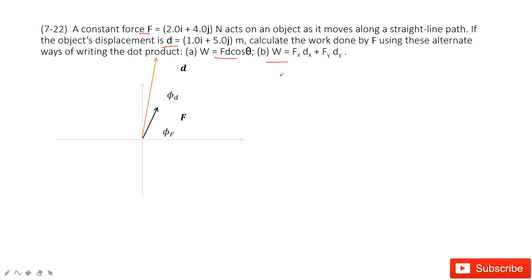So how can we do that individually? So first one, if we want to find the work as f and d cosine theta, we need to find the magnitude for f and the magnitude for displacement.